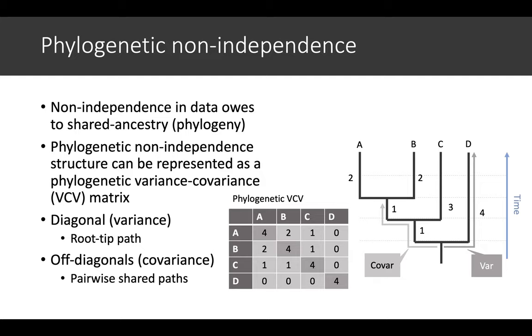The phylogenetic non-independent structure can be represented as something called a phylogenetic variance-covariance matrix. If we take this phylogeny as an example, you can convert this into a phylogenetic VCV or variance-covariance matrix.